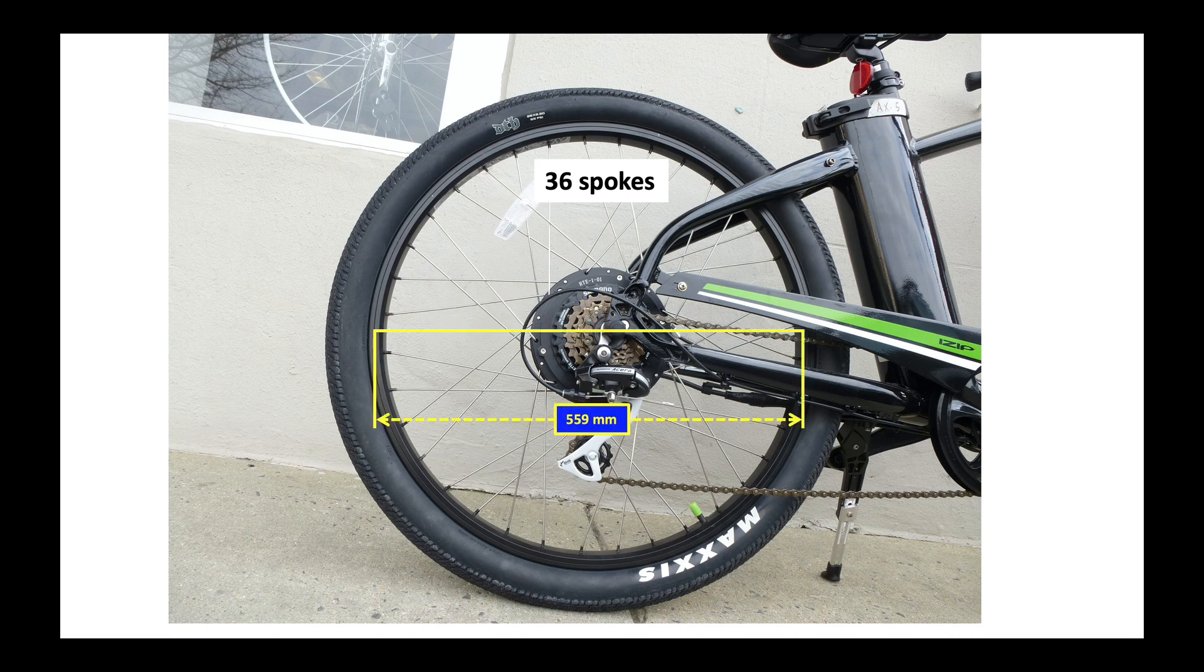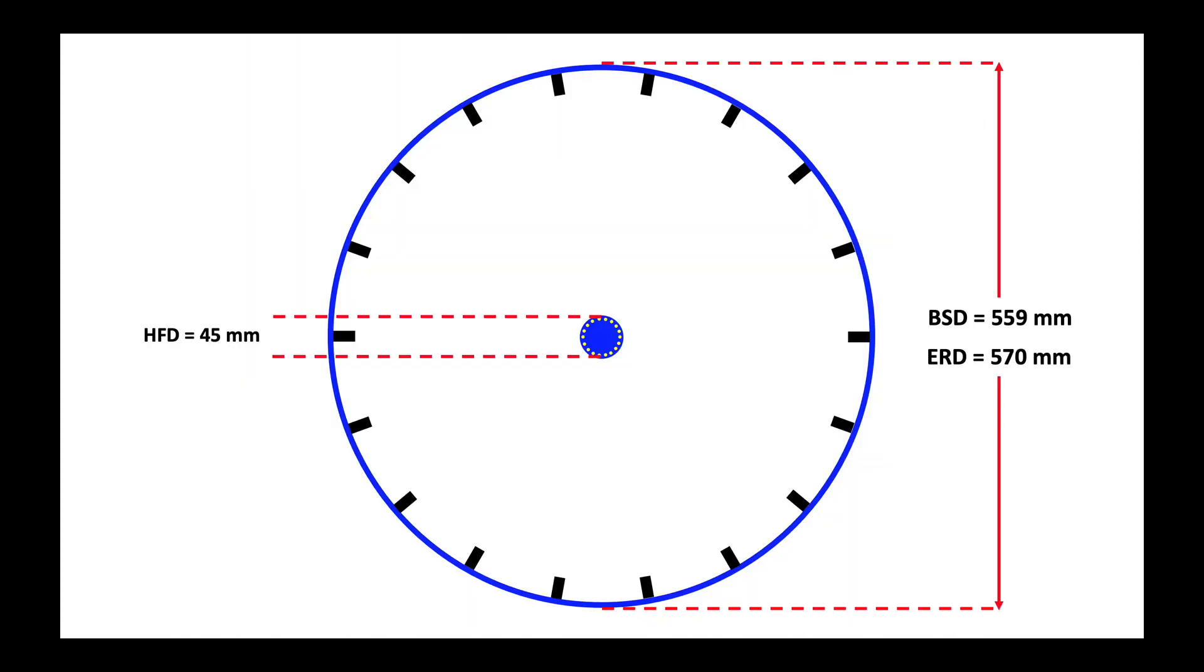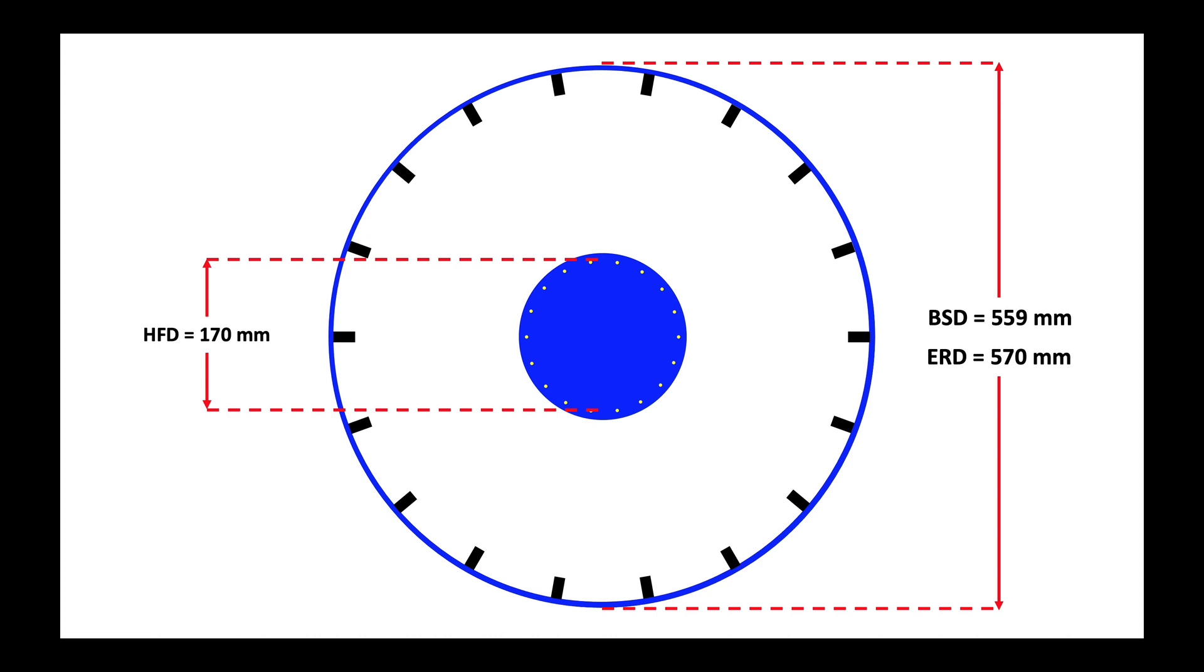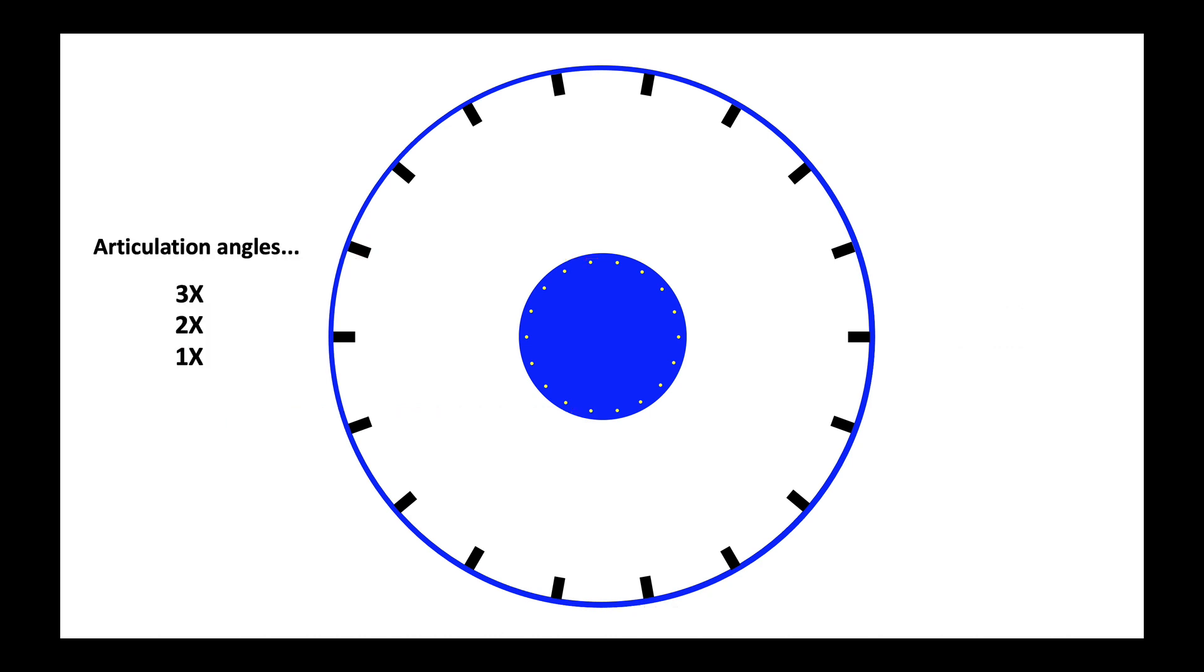Here is our bead seat diameter of 559 millimeters. If we had a normal size hub we might see something like this. But we don't have a normal size hub, we have a big motor. So if we compare our wheel with a normal hub with what it would look like with a motor hub of 170 millimeters, we have quite a different picture.